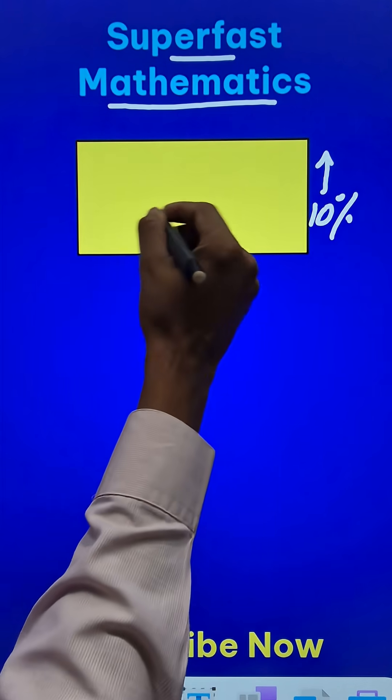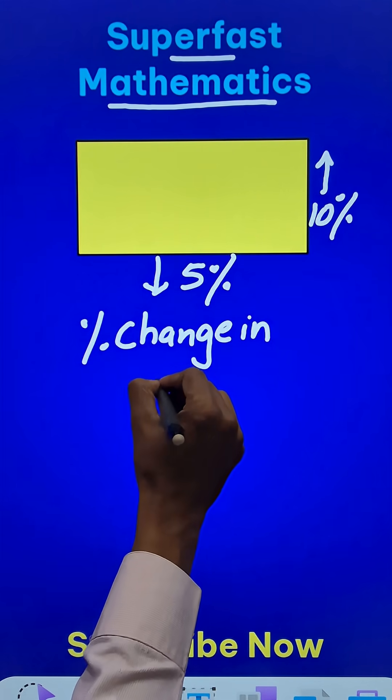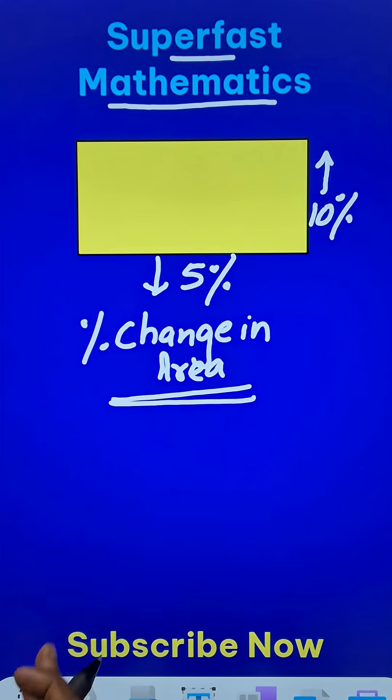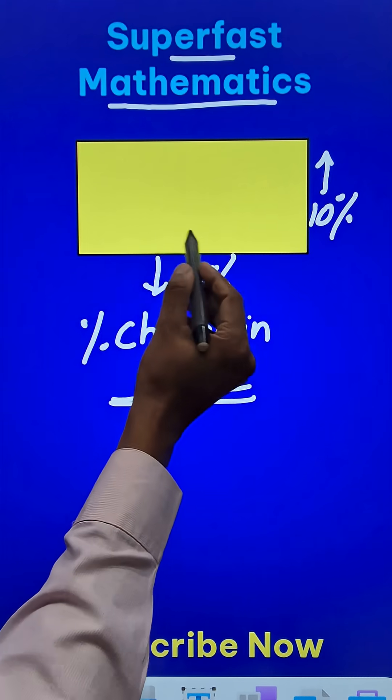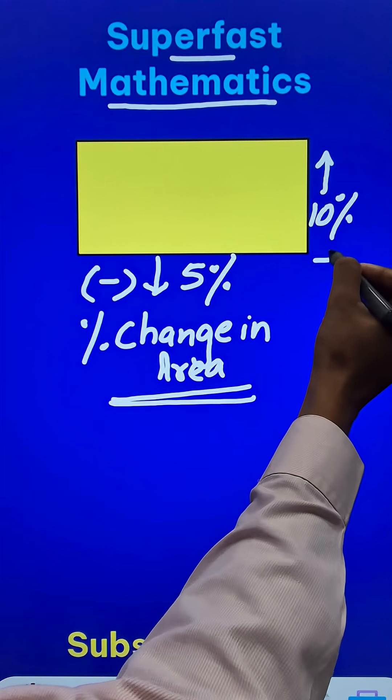We need to find what is the percentage change in its area, and the traditional method obviously will consume a lot of time, so I need a short trick. The decrease is represented by negative and the increase is represented by positive.